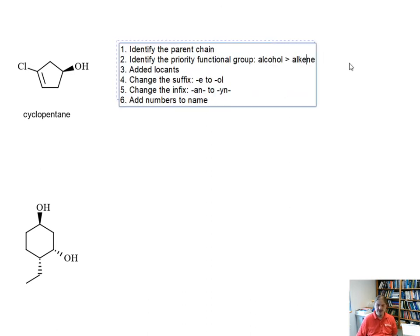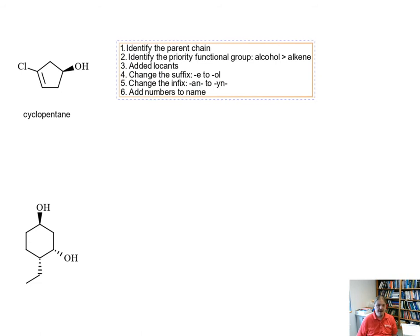The alcohol is a higher priority functional group than the alkene. So we're going to focus on that. And we need to add the locants. Now however there are two possible ways we can imagine numbering around the ring. I can number clockwise all right and that gets the first alkene carbon at three and the chlorine at four.